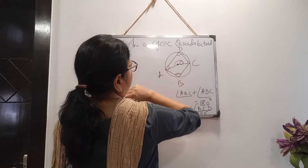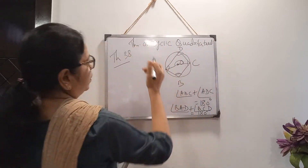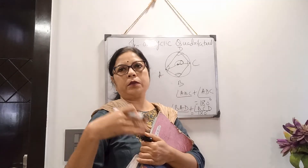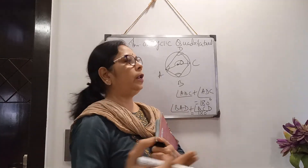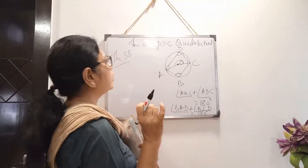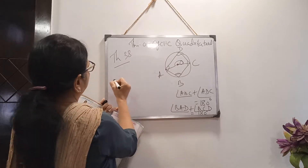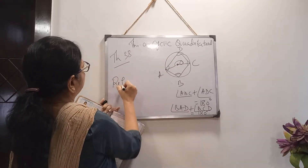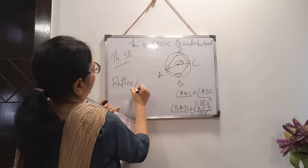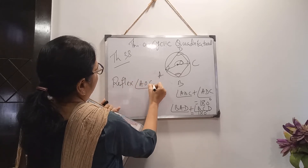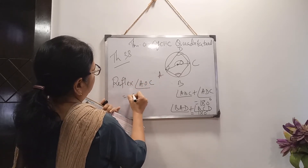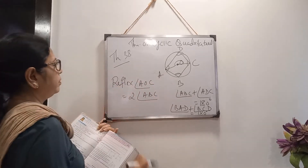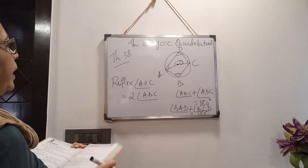The reflex angle AOC at the center and angle ABC on the circumference are on the same arc ADC. So from the previous theorem — the angle formed at the center is double the angle at any point on the circumference — we can write: reflex AOC equals twice of angle ABC.